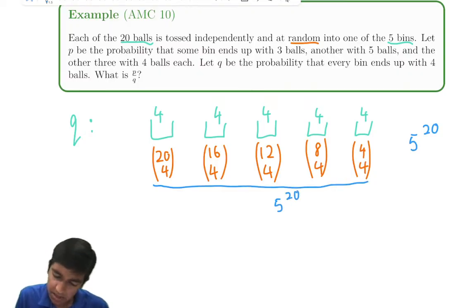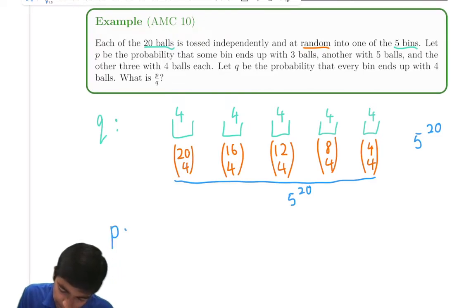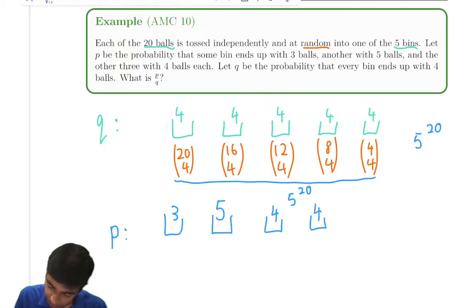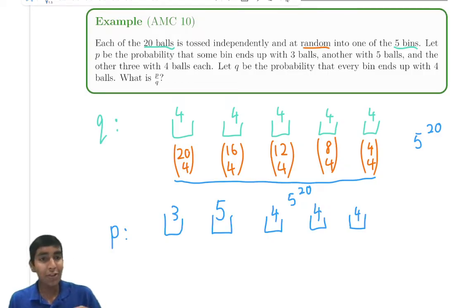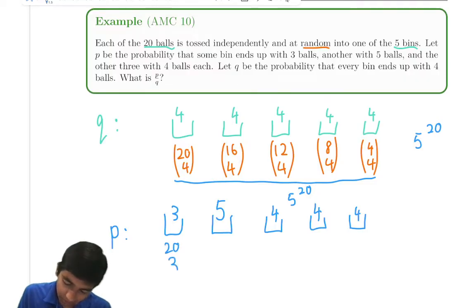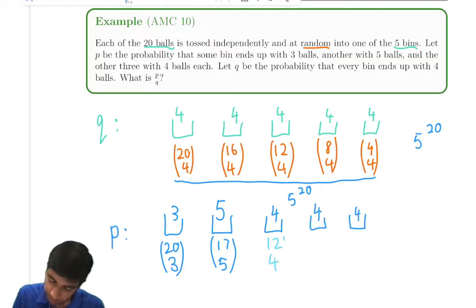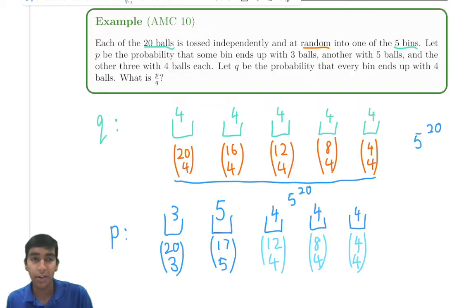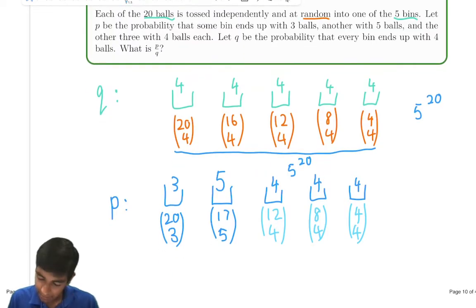Now let's look at p. p is a little bit more complicated though. In p, we have to have one bin has three balls and one have five, and the others still have four. How many ways are there to do this? Well, 20 total balls, so we can just choose three of them for the first bin. From the remaining 17, we choose five of them for the second bin. From the remaining 12, we choose four of them for the third bin. And then for the remaining eight, we choose four. And from the last four, we just choose the last four. And that's just one because there's four balls left and four spots for the four balls in the last bin. So four choose four. And again, we divide by five to the 20. That doesn't change.